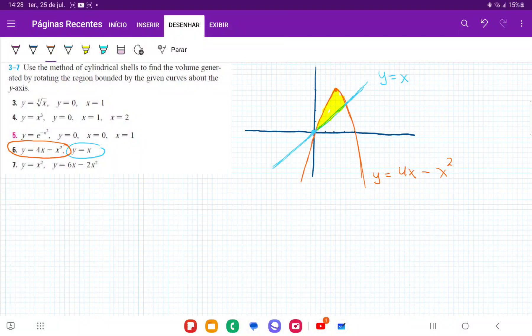So for number 6, we want to take the area bounded between these two curves, and I've drawn them. So it's this orange curve for 4x minus x squared, and the blue curve, y is equal to x. And then the area between them is this thing that I've shaded in yellow, and we want to revolve it about the y-axis.